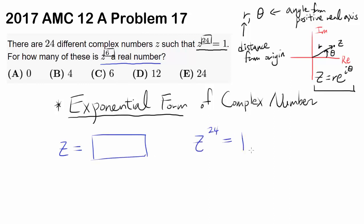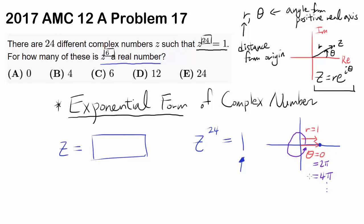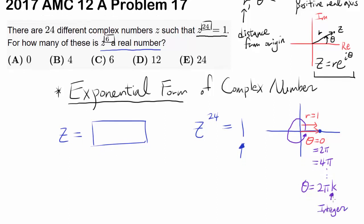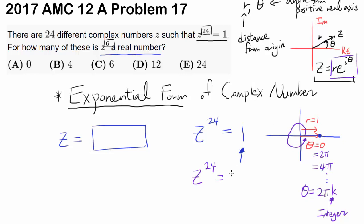We know Z to the 24th is equal to 1, and we can write 1 in exponential form. The value 1 is located on the real axis, so r equals 1. For θ, it can be 0, or 2π (one full revolution), or 4π (two revolutions), and so on — so θ = 2πk where k is some integer. So Z^24 = e^(i·2πk), and we can now find Z.